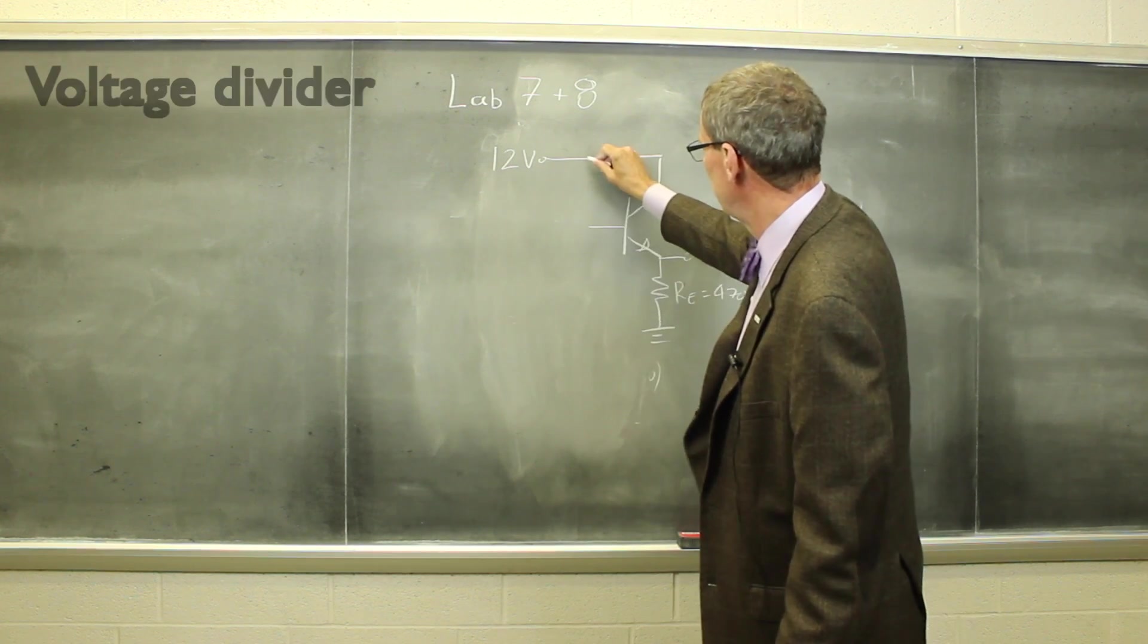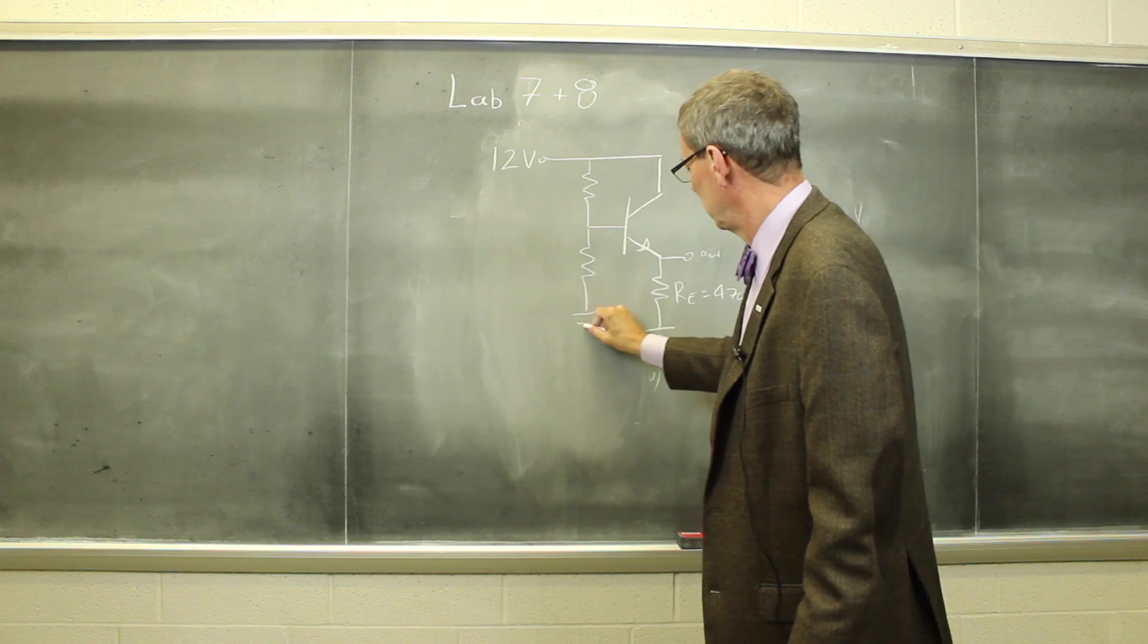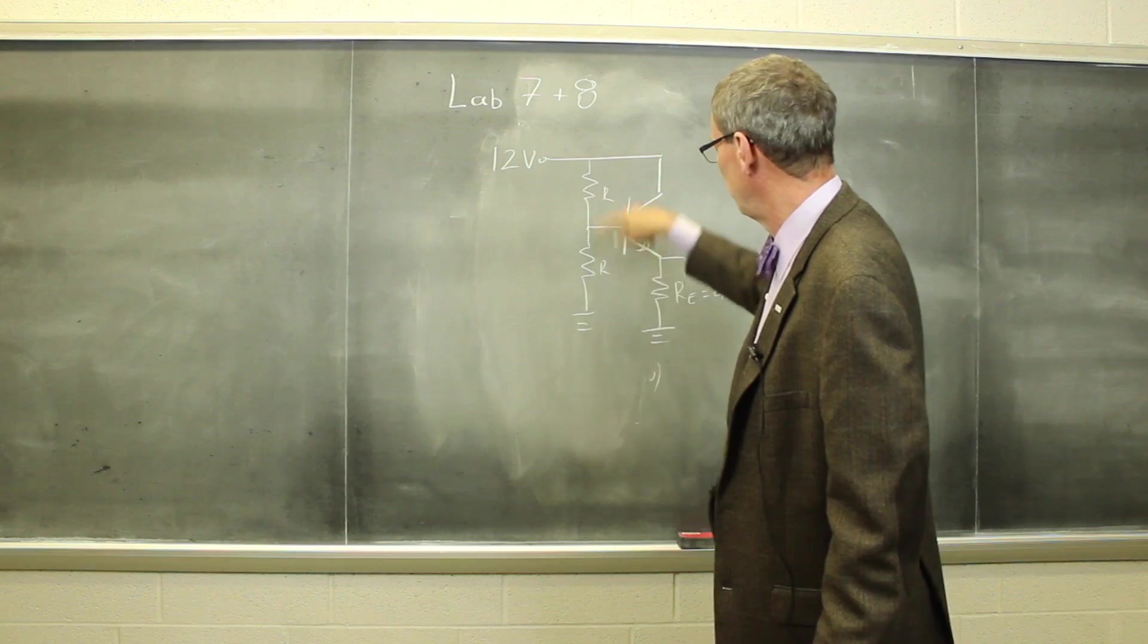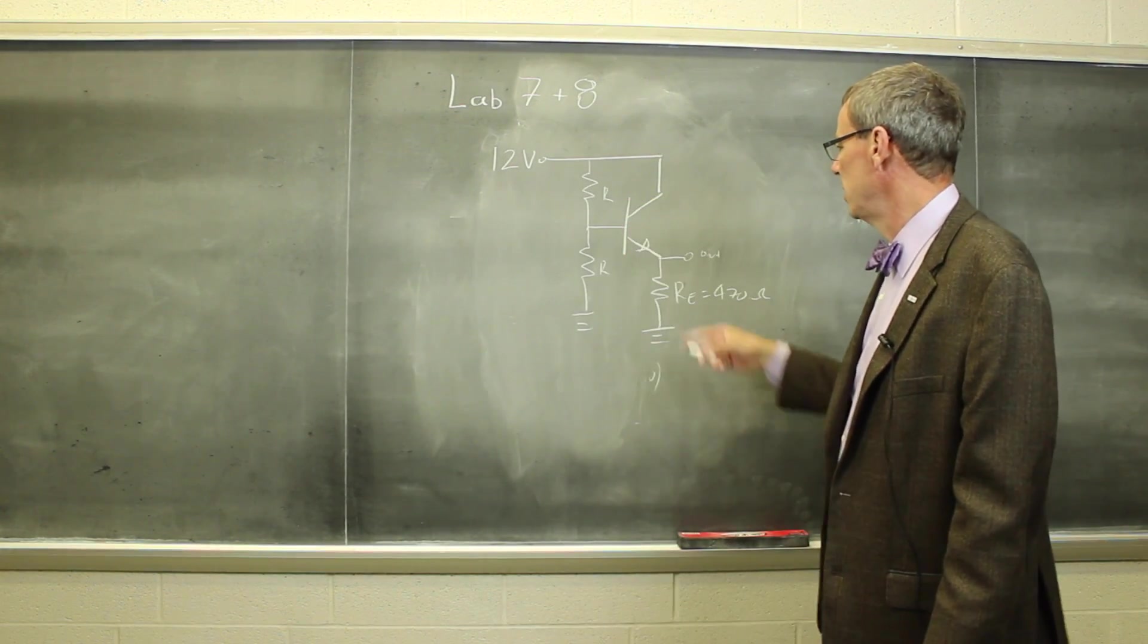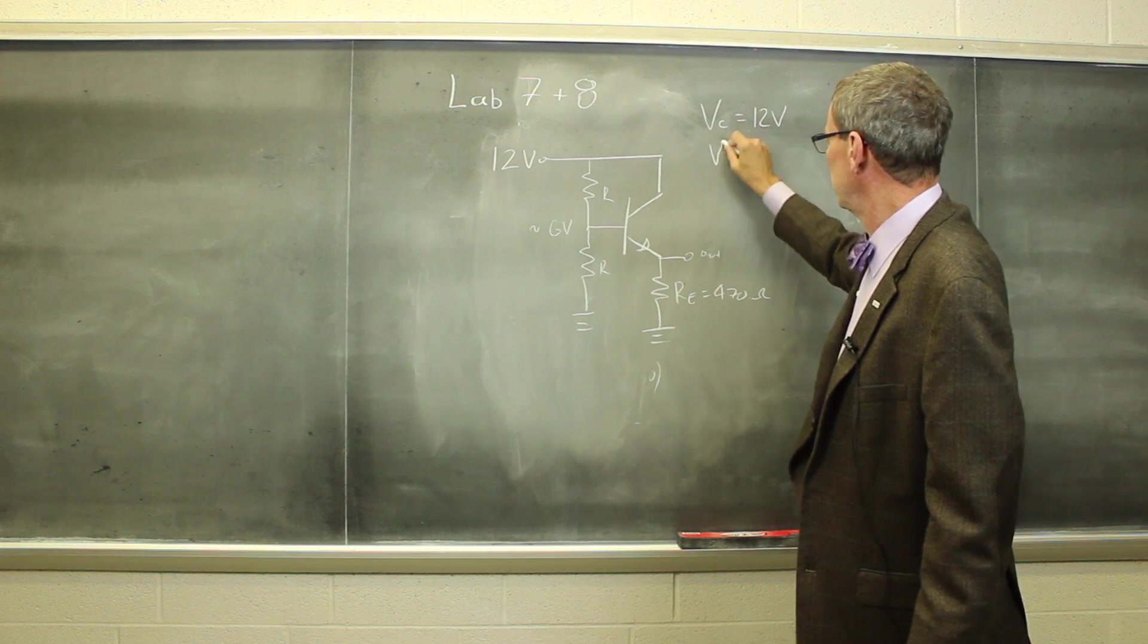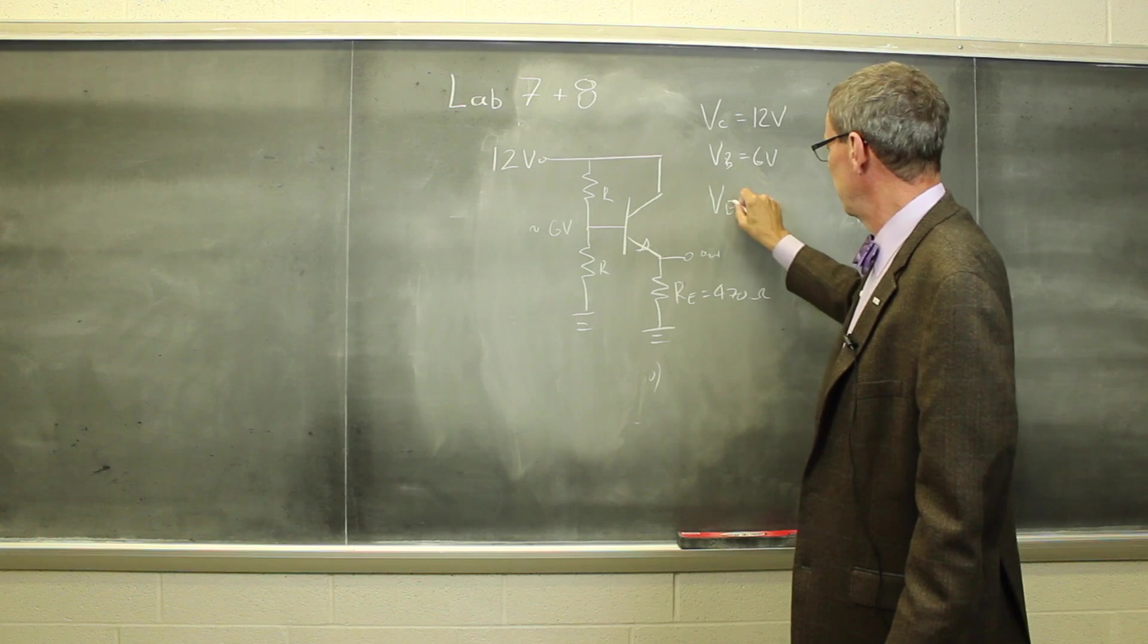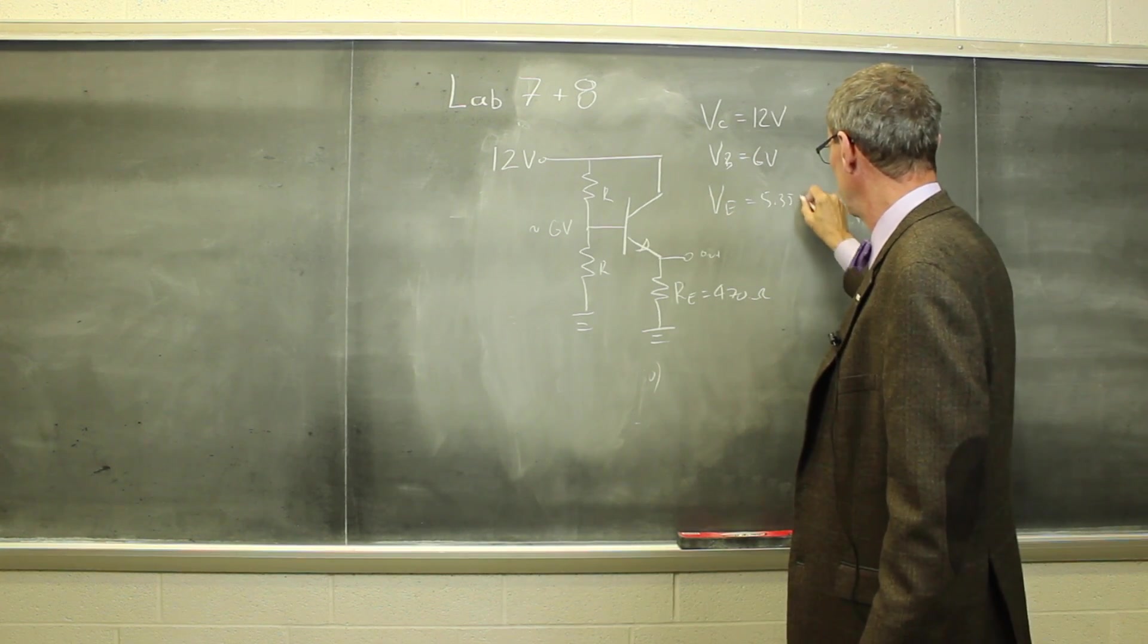And the base, I'm going to bias it by putting a voltage divider between 12 volts and ground, putting the transistor at the middle of that. So if these are the same resistors, then this voltage is nominally about 6 volts, collector equals 12 volts, base is 6 volts, emitter is then one diode drop below that, so it should be 5.35 volts.